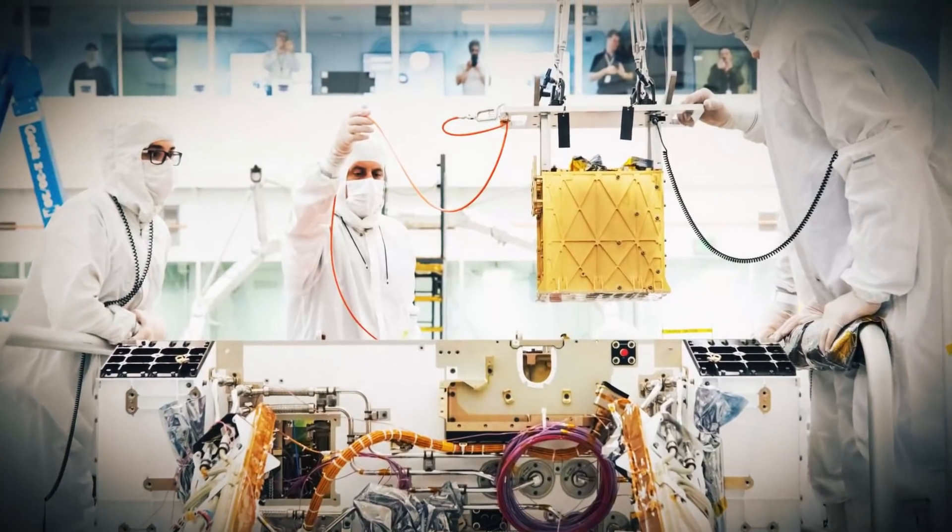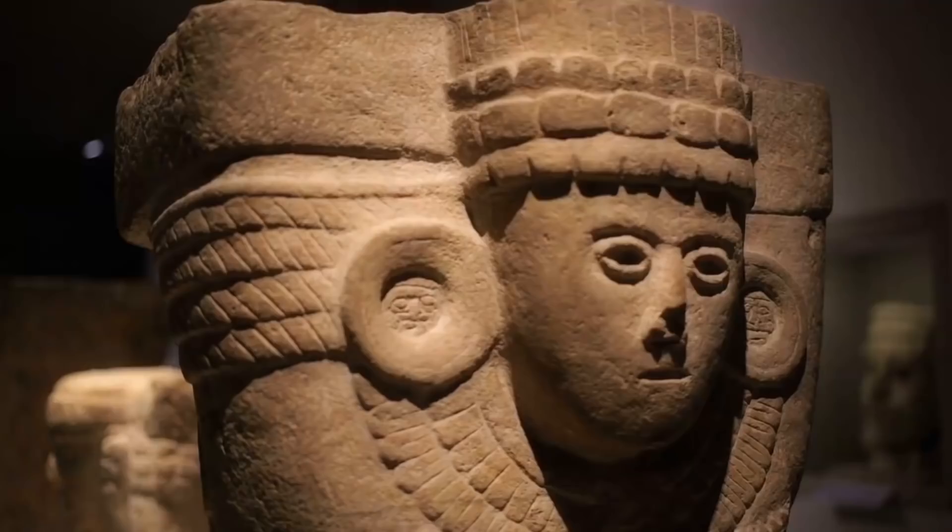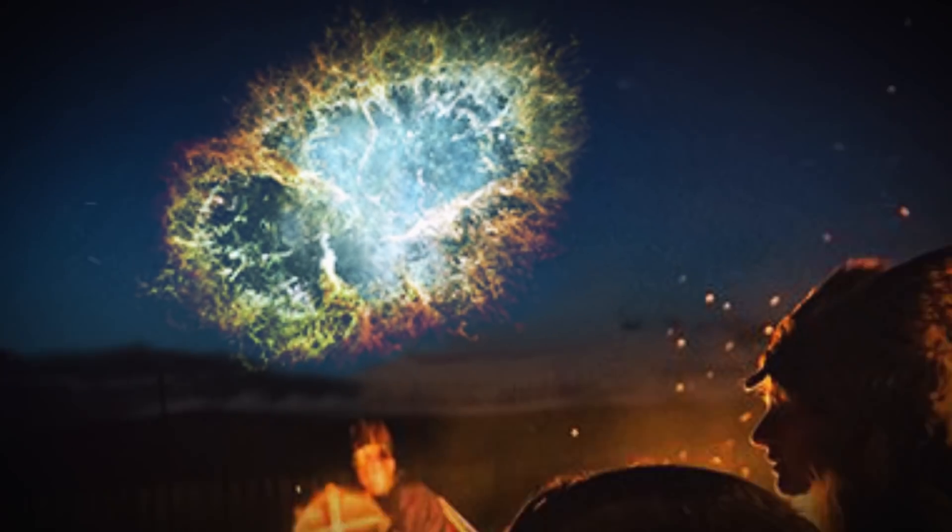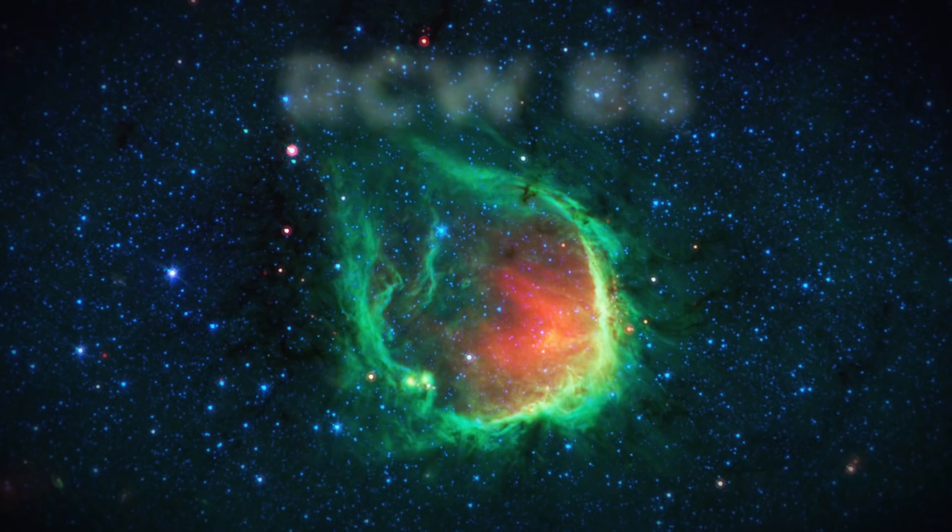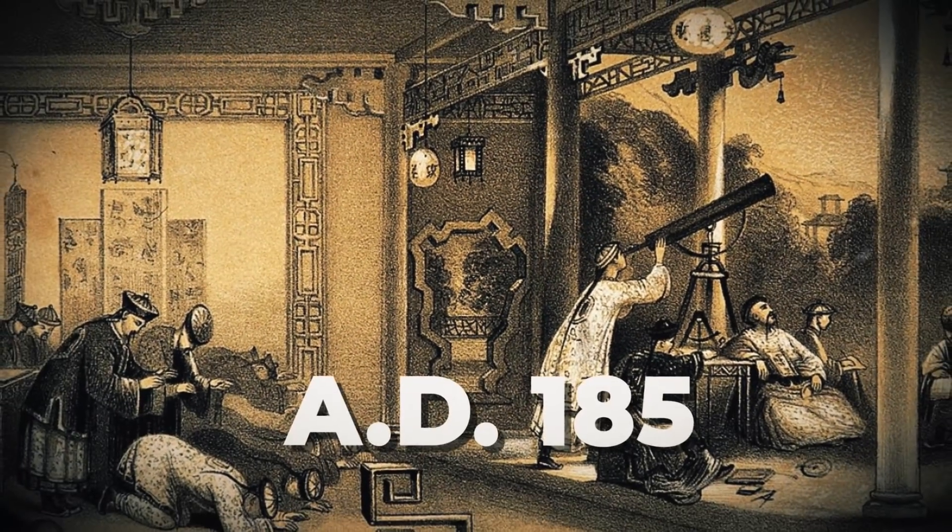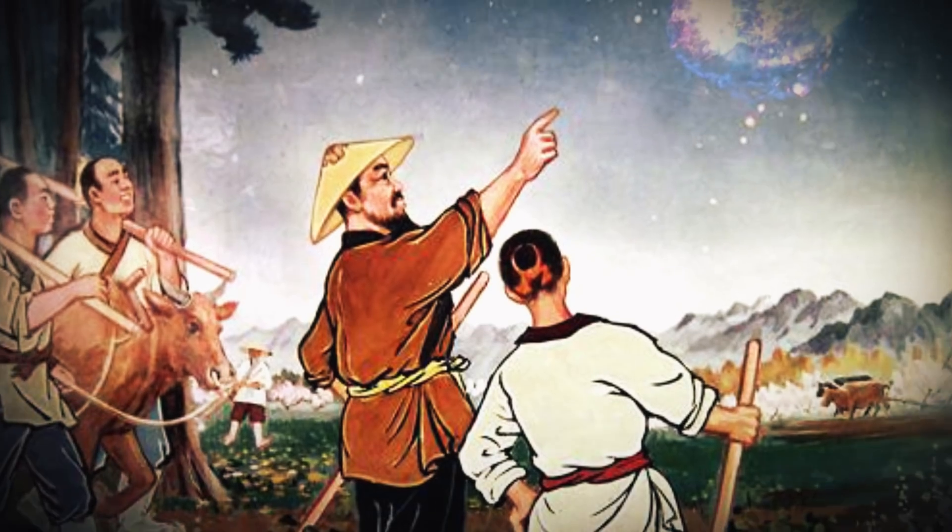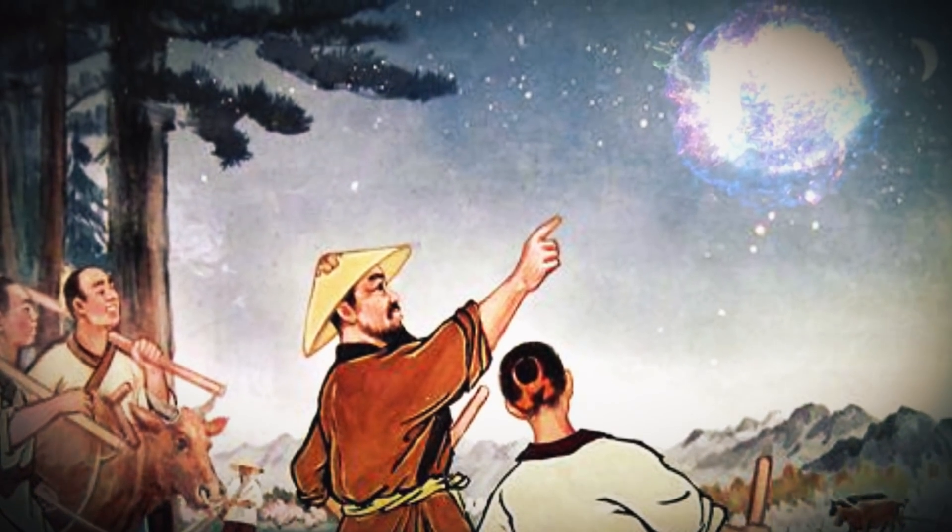People have been studying supernovae for generations now, long before the telescope was built. Several civilizations documented supernovae. RCW 86, discovered by Chinese astronomers in AD 185, is the oldest known supernova in history. NASA believes that those on the ground were able to spot the supernova in the night sky for eight months long.